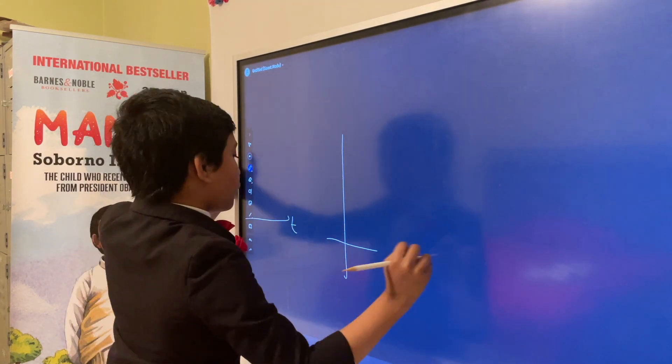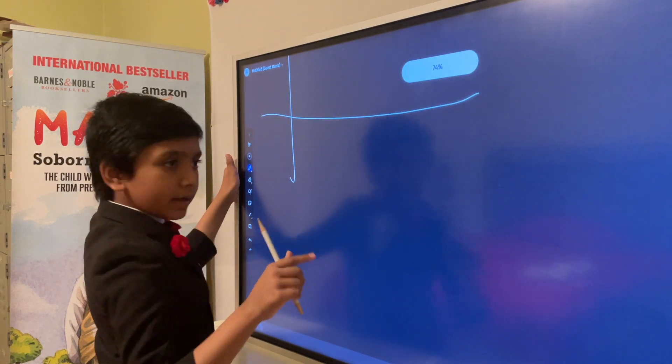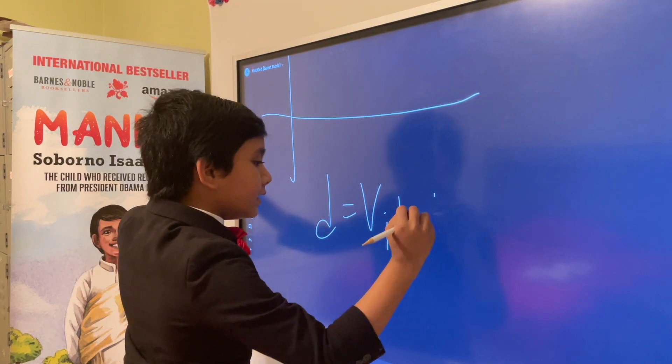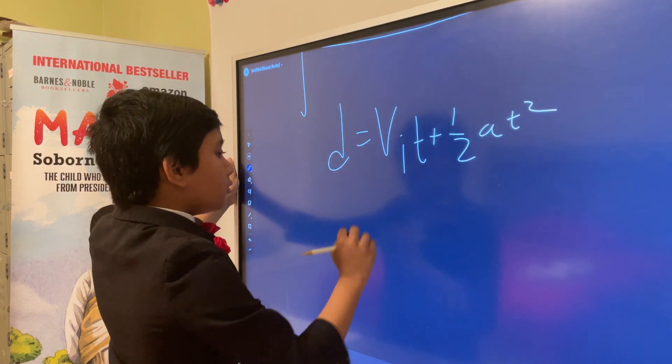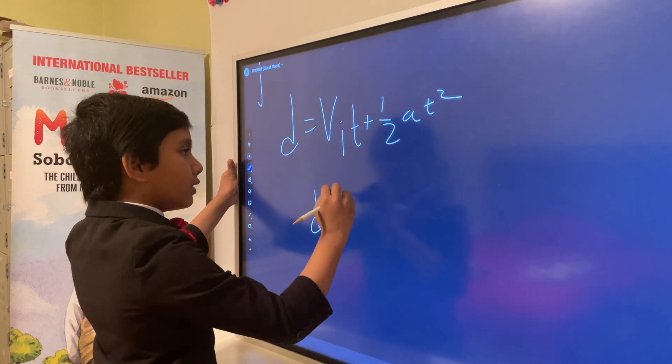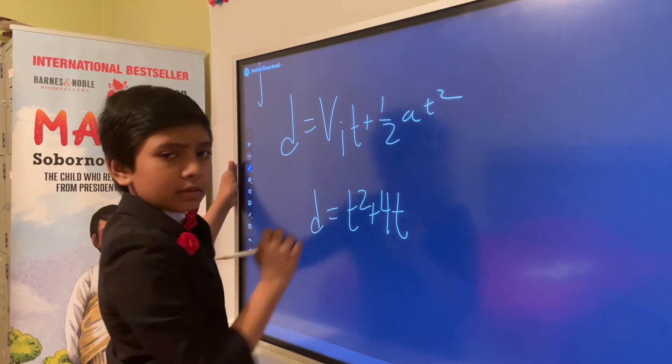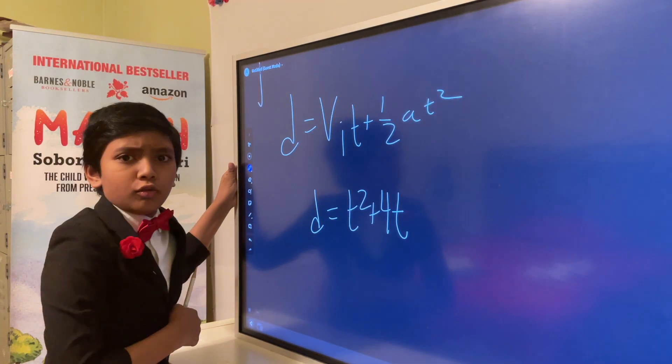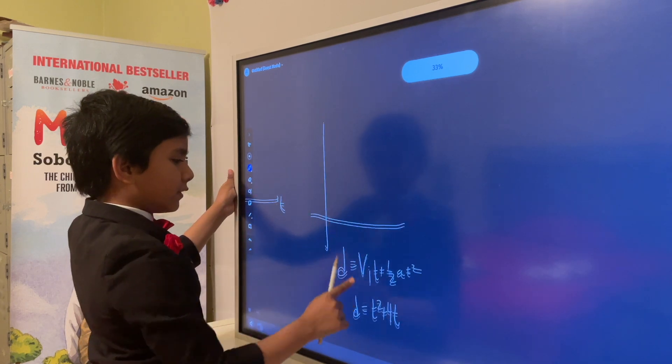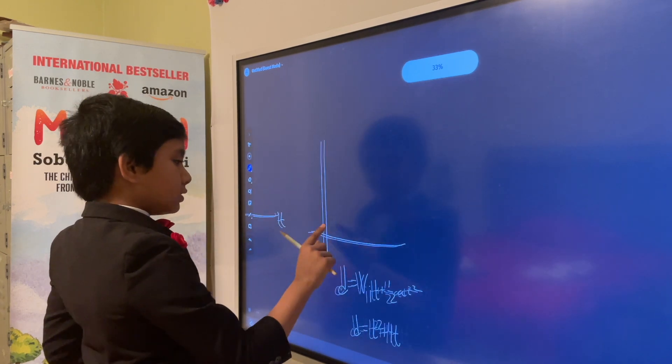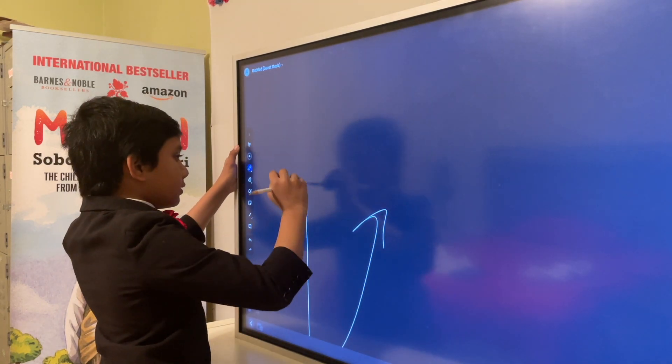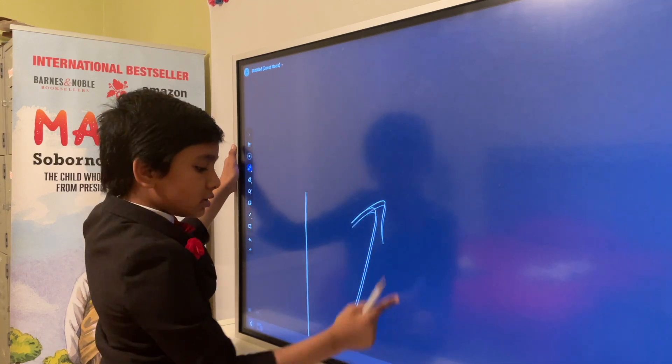And distance over time, as a result, looks a bit different. D equals VIT plus half AT squared. So that means D will be half AT squared, which gives us T squared plus 4T. Or in other words, T times T plus 4. Which is basically just going to look like a quadratic.